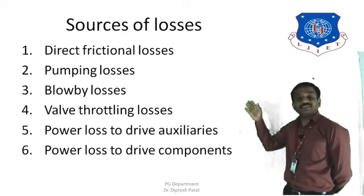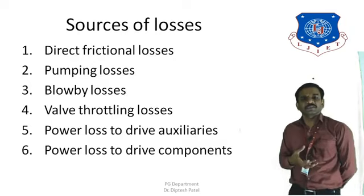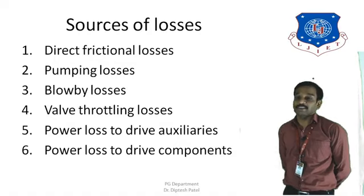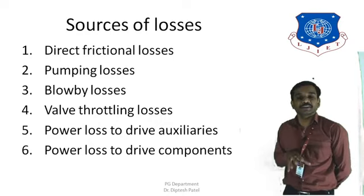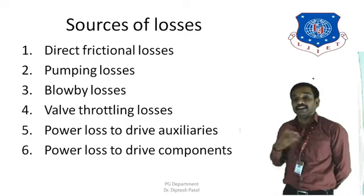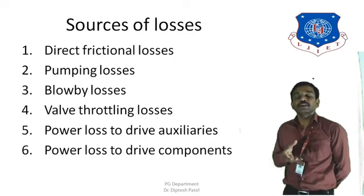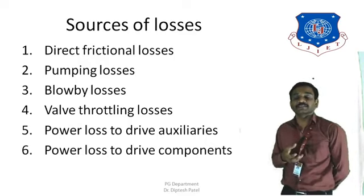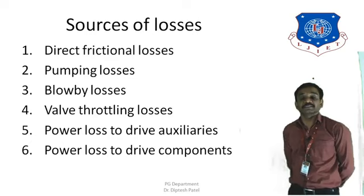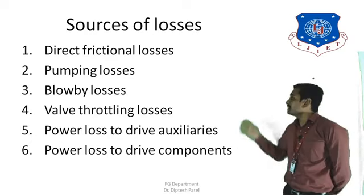There are six different sources of losses in IC engines, friction losses being among them. The first is direct frictional losses, which is the major loss category — caused by the rubbing action between various components such as the piston and cylinder, and rolling actions between the camshaft, crankshaft, and other components.